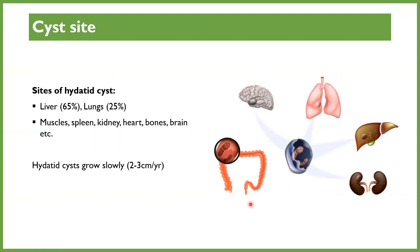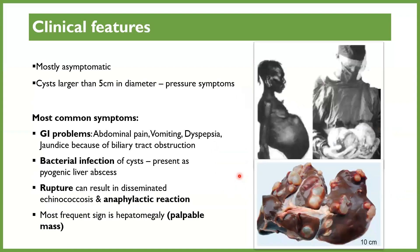The different sites where hydatid cysts can form — mostly it's the liver and the lungs. The liver constitutes almost 65% of the sites that hydatid cysts normally go to, and the lungs around 25%. Others include the brain and the kidneys. Hydatid cysts normally grow very slowly and gradually — it takes a few centimeters per year. That growth or enlargement is what brings most of the problems. With light infestation it is normally asymptomatic and goes unnoticed. However, if cysts become numerous or grow too big — more than five centimeters — they start putting pressure on the surrounding parts of the organ they have infested.